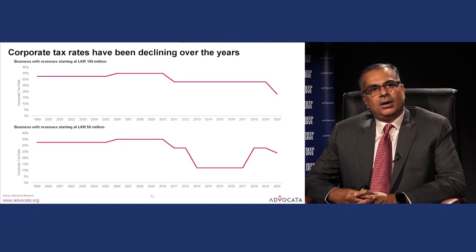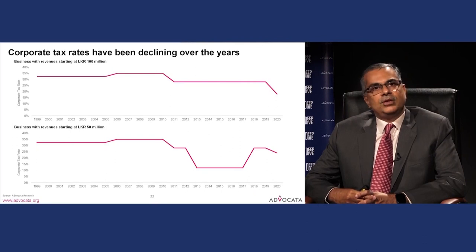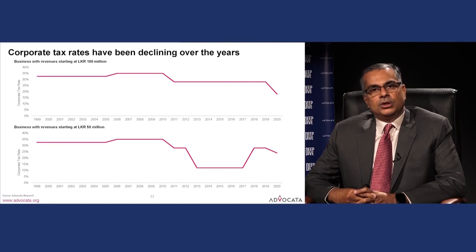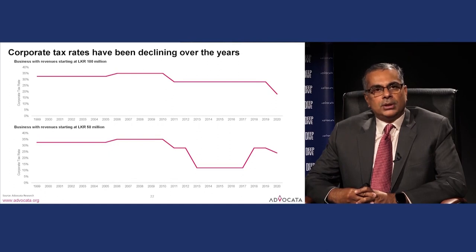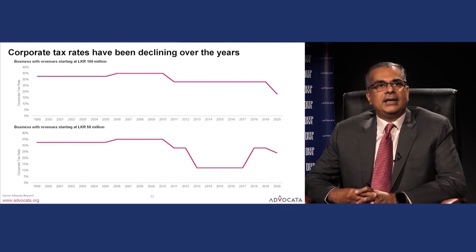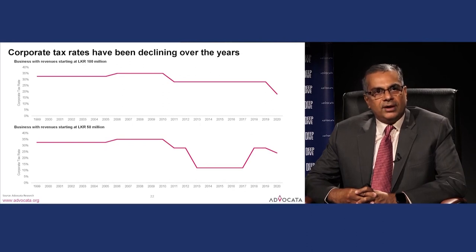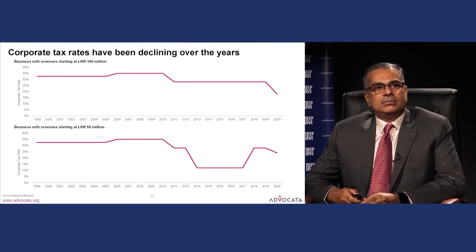An analysis of a theoretical firm over 20 years — one with revenues of 100 million rupees and another with 50 million — taking a constant profit rate, shows that the effective rate of taxation has come down over this period. For the smaller firm it came down and then appears to have gone back up.